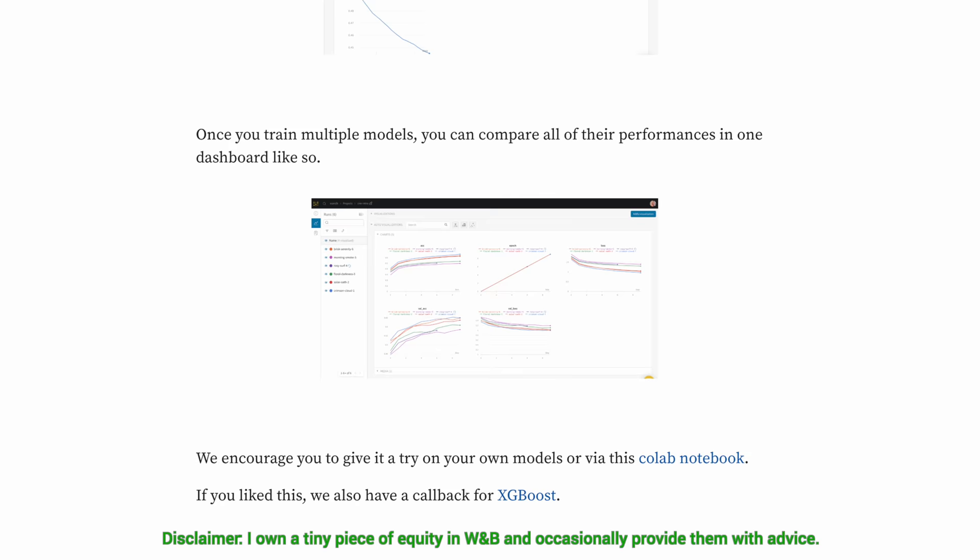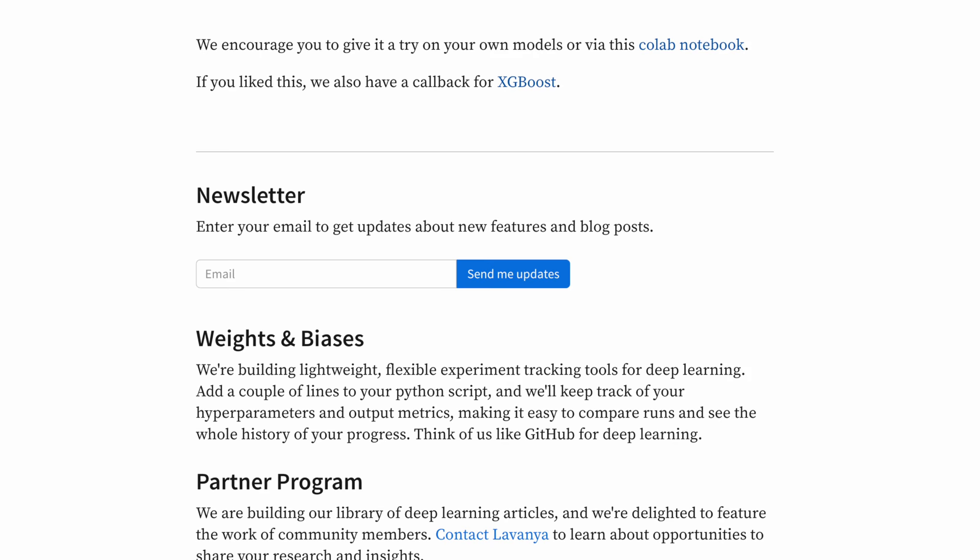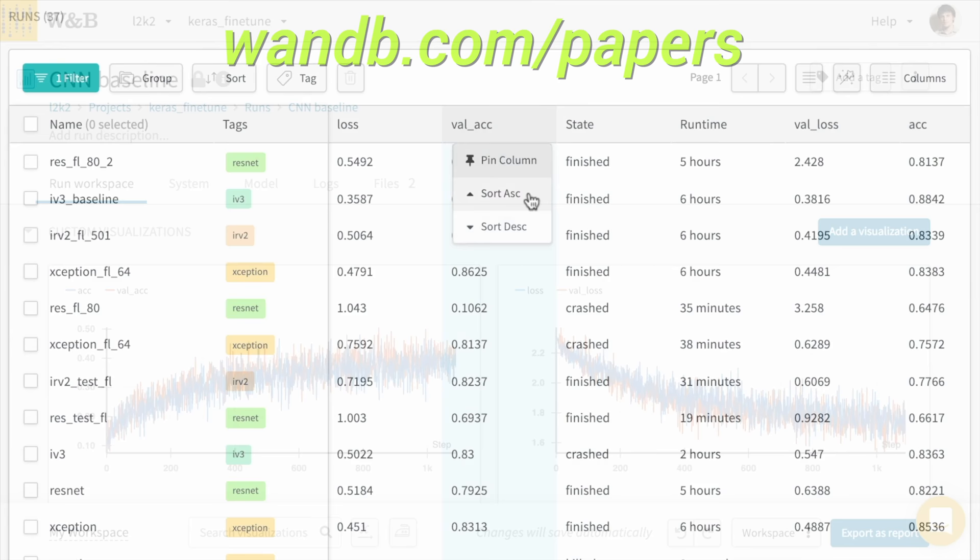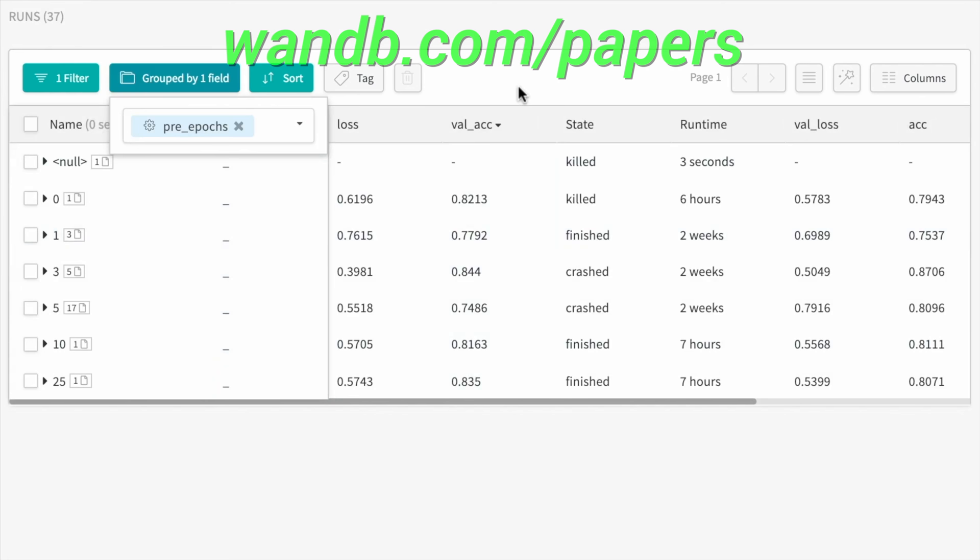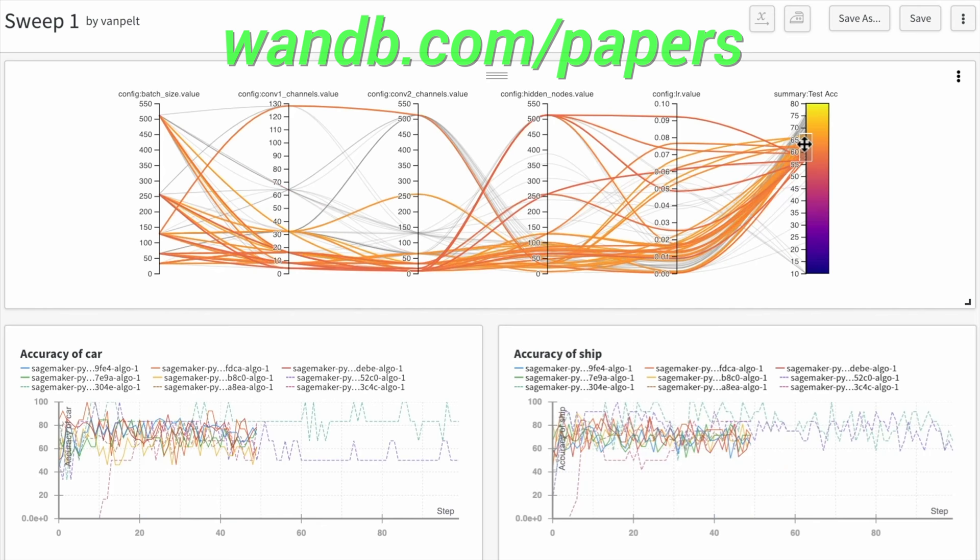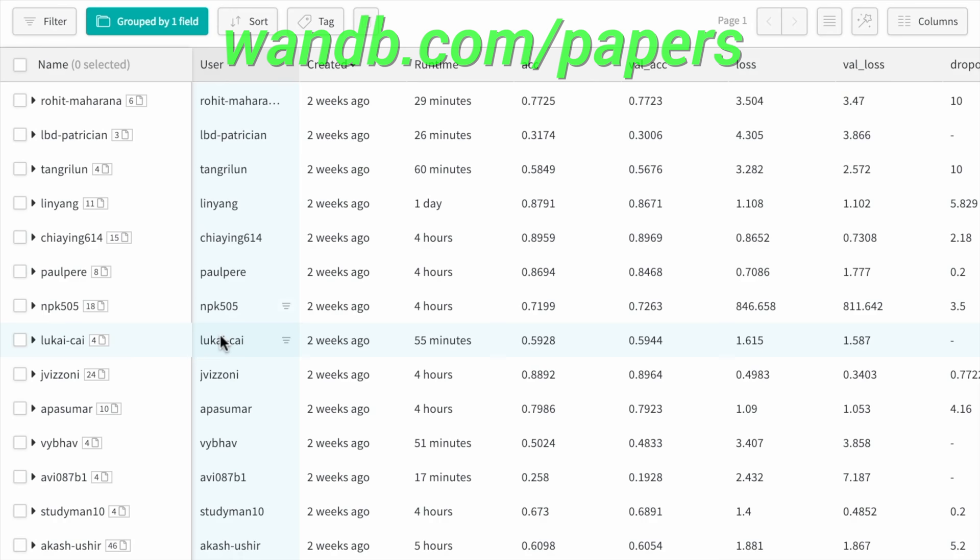Their system is designed to save you a ton of time and money, and it is actively used in projects at prestigious labs such as OpenAI, Toyota Research, GitHub, and more. And the best part is that if you are an academic or have an open source project, you can use their tools for free. It is really as good as it gets! Make sure to visit them through wnb.com slash papers, or just click the link in the video description, and you can get a free demo today!